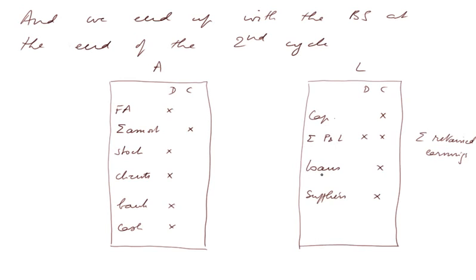Loans in credit — that is costly debt we owe to various lenders — and suppliers in credit, representing various debt we owe to suppliers. We shall learn some more accounts on the asset side, but minor ones, and some more accounts on the liability side, but also minor ones.